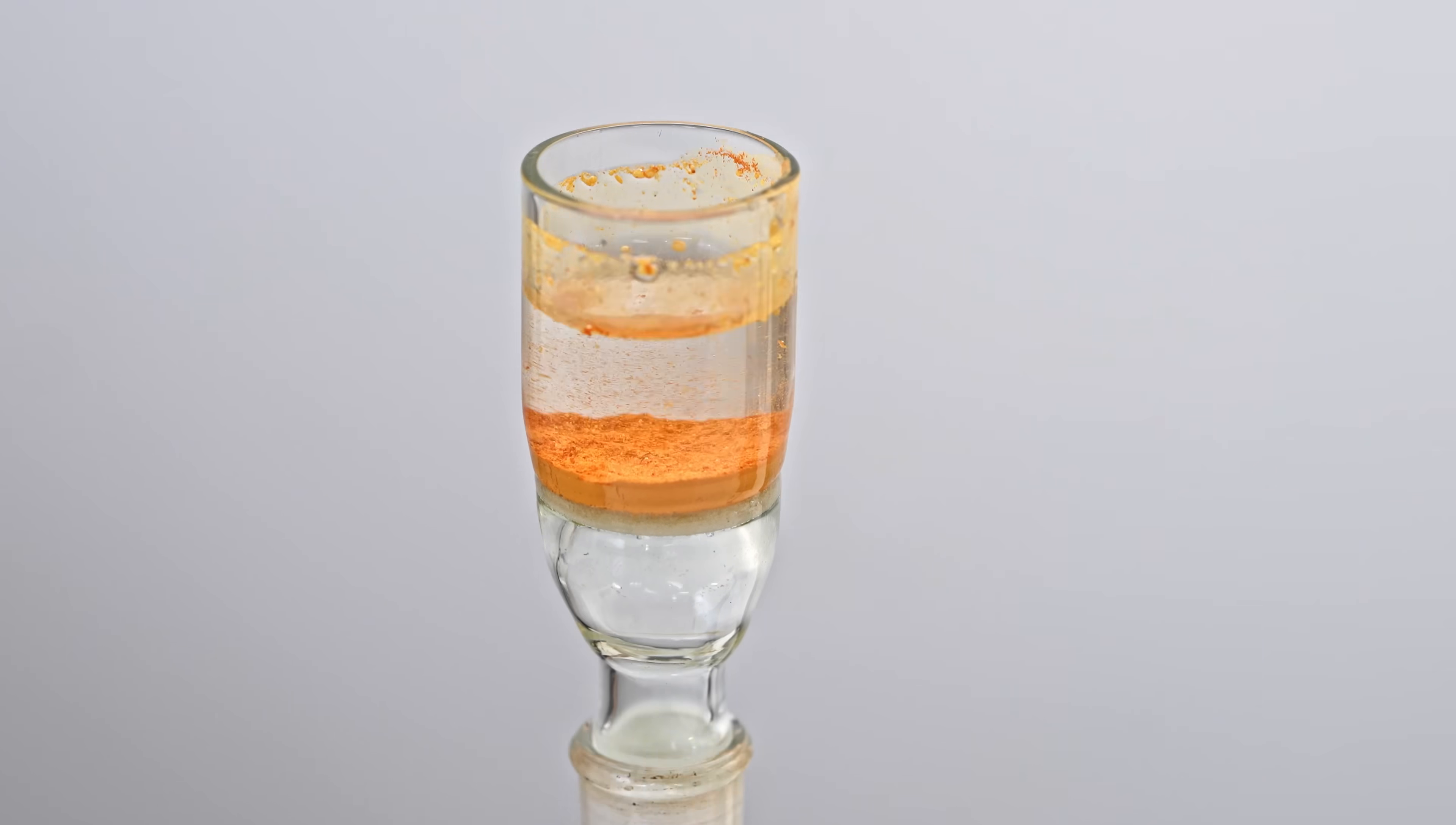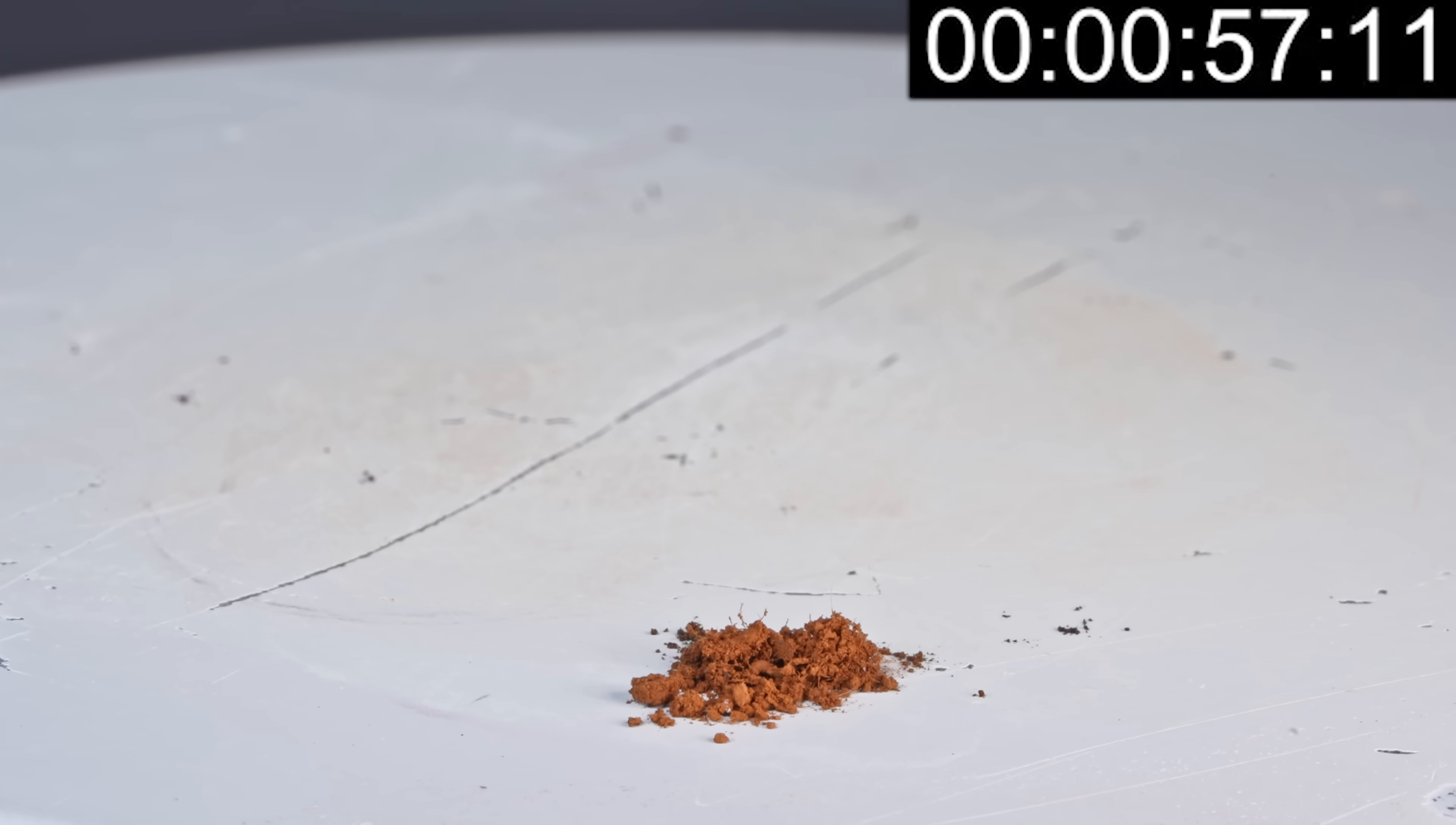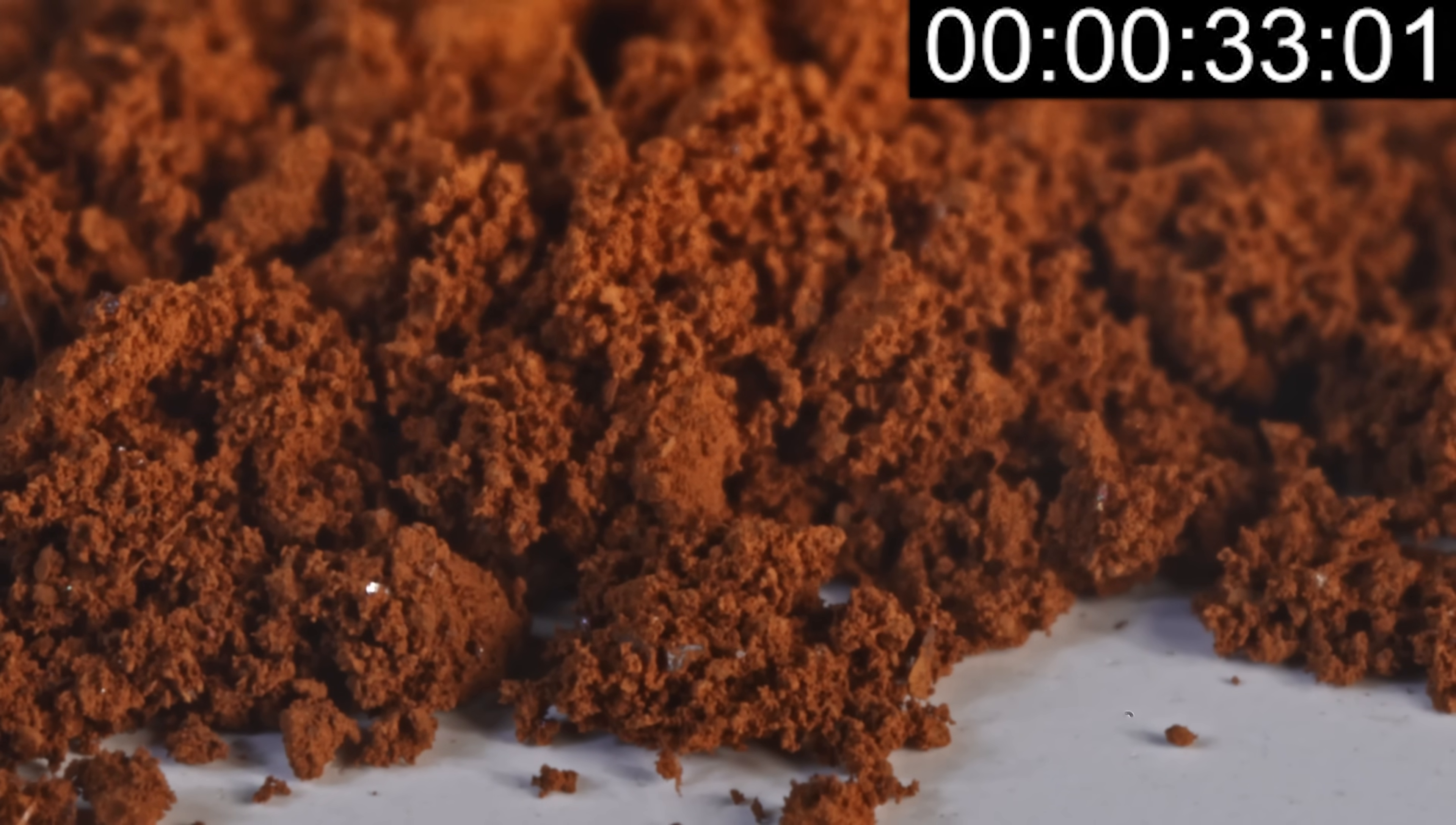Now that we have gold fulminate, let's test it and see that mysterious purple smoke. For the first experiment, I put some of this powder on a hot plate and waited a little. A small explosion occurred, leaving behind purple marks, but the smoke wasn't very visible. Even at 1000 frames per second, or even 12,000 frames, the purple smoke is still hard to see.